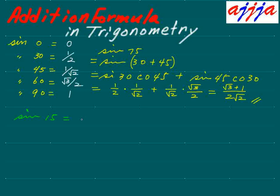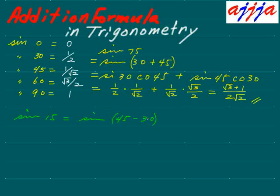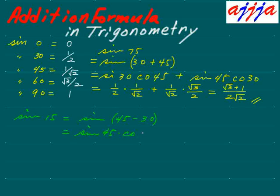Now, sine fifteen. Sine fifteen means you can set this up as sine forty-five minus thirty. If we have a plus then plus, minus minus — in sine, the cosine law is opposite. So we can do it this way: sine forty-five times cosine negative thirty.